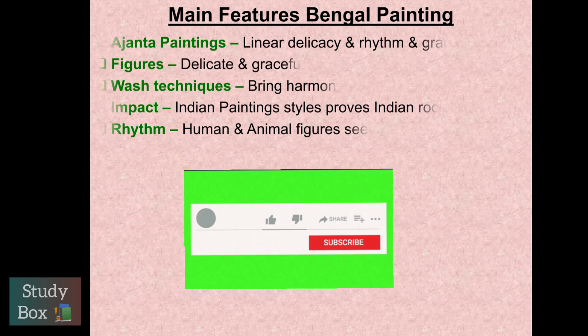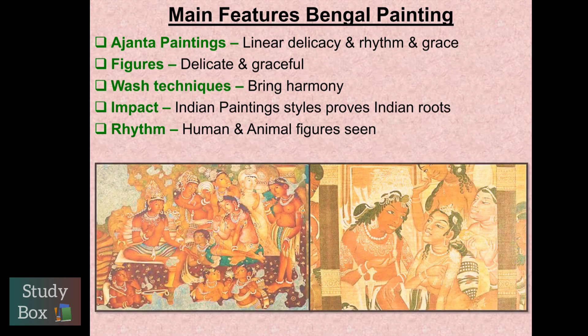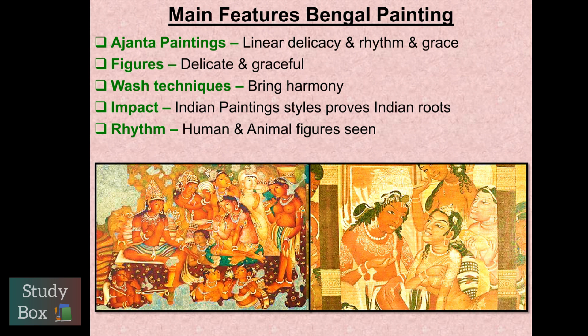Now we will study the main features. The main features of Bengal School paintings show Ajanta-influenced paintings. How did they express character? Linear delicacy, rhythm, and grace in paintings. These are the key things to remember.